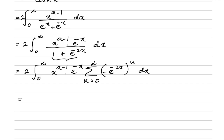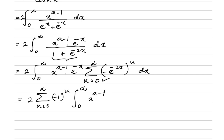We can switch the sum and the integral, giving us 2 times the sum from n=0 to infinity of (-1)^n times the integral from 0 to infinity of x^(a-1) times e^(-(1+2n)x) dx.